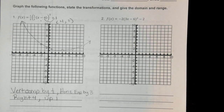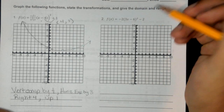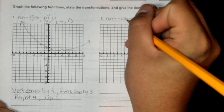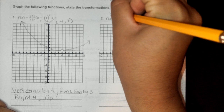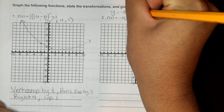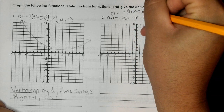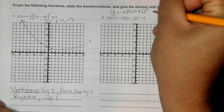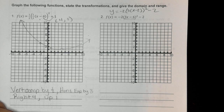For number two, same idea. Before we get to the transformations, we need to put this in graphing form. We have to factor out the 3, so this becomes y equals negative 2 times parentheses 3 times (x minus 2) close parentheses squared, then minus 2.